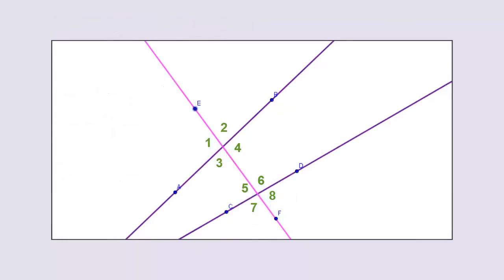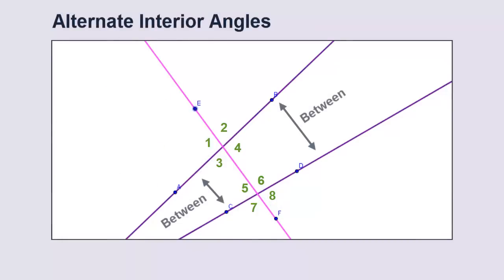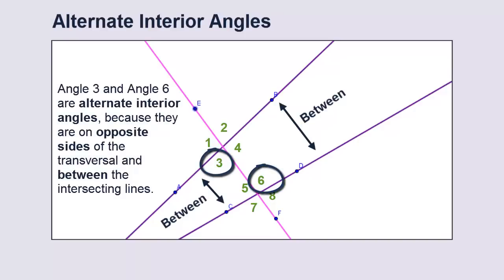Now, when the angles are between the intersecting lines but on opposing sides of the transversal, we call them alternate interior angles. Alternate means opposing sides of the transversal, and interior means between the intersecting lines. A transversal intersecting two lines forms two pairs of alternate interior angles.